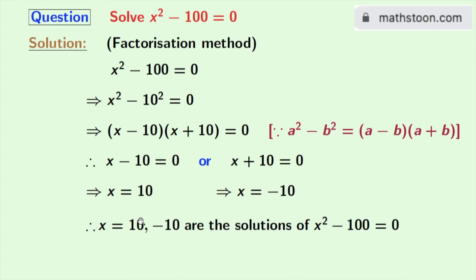So look that again we have x equals 10 and minus 10, and these are the solutions of the given equation x squared minus 100 equals 0.